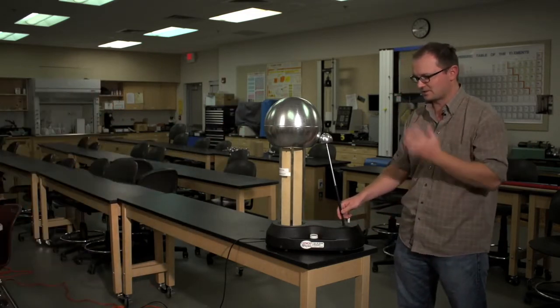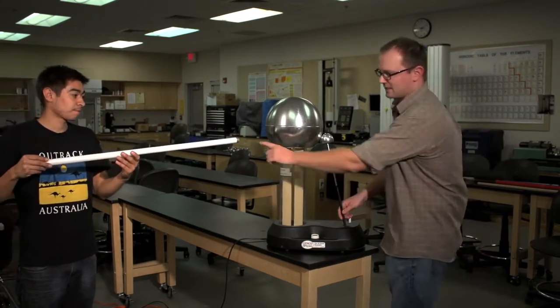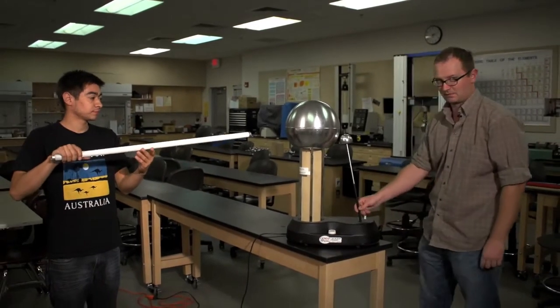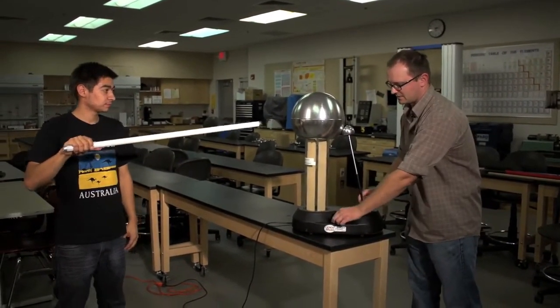Now Alex is going to come up and do the same thing, holding the light bulb a different way. He wants to make sure he's not touching these electrodes here, otherwise he might get a little more spark than he's hoping for. Go ahead and take a step back for just a second.